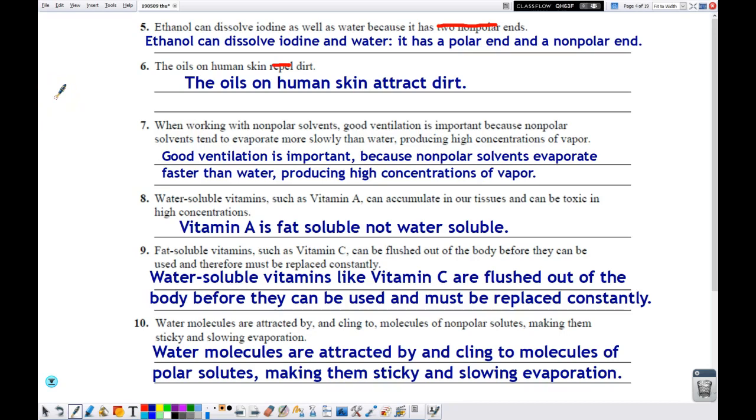When working with nonpolar solvents, good ventilation is important because nonpolar solvents tend to evaporate more slowly than water, producing high concentrations of vapor. Actually, the truth is they evaporate a lot faster than water. So they produce a lot of vapors. So when you're using nonpolar solvents, you need to make sure you have good ventilation. Examples of this would be like the solvents you use to remove paint. You don't want to use that in a closed space. You want to make sure air is flowing around you so that those volatile solvents and the vapors that come from them are being moved out of the room so you don't get a headache or pass out.